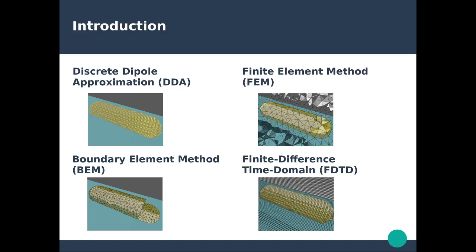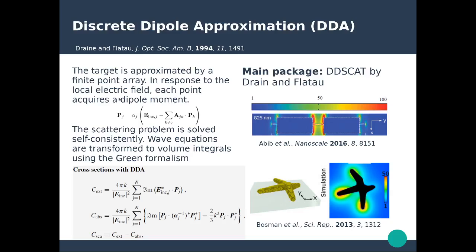Let's start with the first method: the discrete dipole approximation, which was introduced by Purcell and Pennypecker in 1973 — a fairly old method. It was really popularized by Draine and Flatau in the early 90s with their DDSCAT open source package. The method approximates the geometry and the object using a finite point array, where each point in space is associated with a simple electric dipole moment. Each dipole moment is calculated using the polarizability of the medium at that particular point, using the electric field incident on the object.